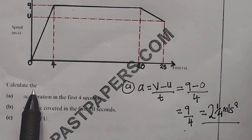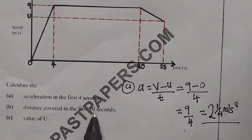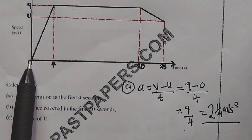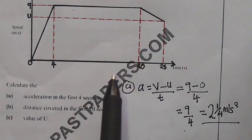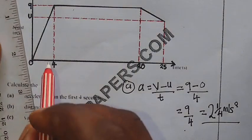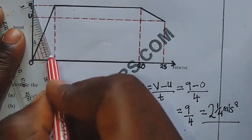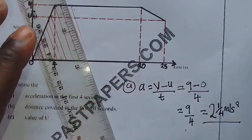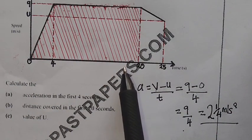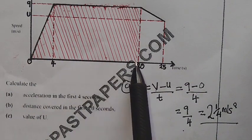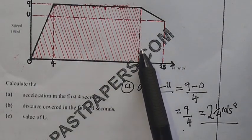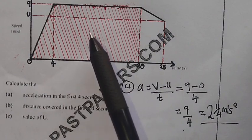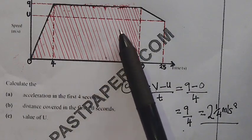Let us now look at question B: calculate the distance covered in the first 20 seconds. When you look at this motion of the sprinter, from 0 to 20 seconds, we are considering the distance under the graph. This is the distance we want in the first 20 seconds, from 0 seconds to 20 seconds. The shape that is shaded is a trapezium, and the distance under this shape means we consider the area under the trapezium.